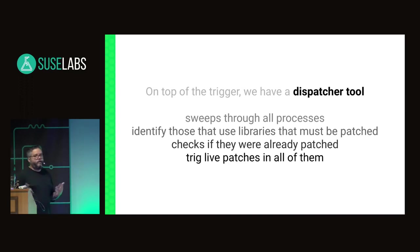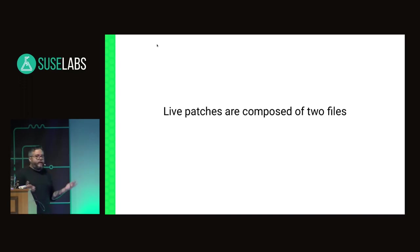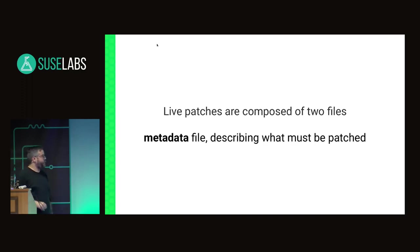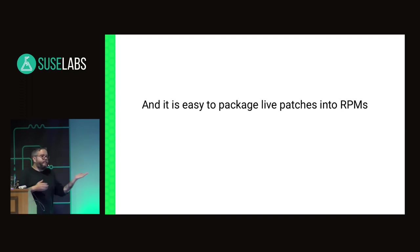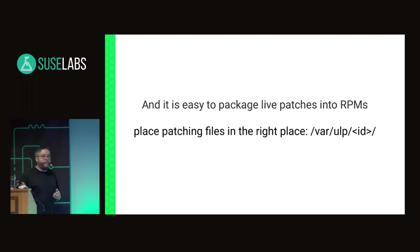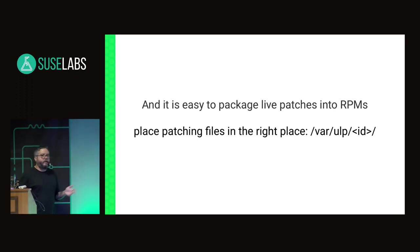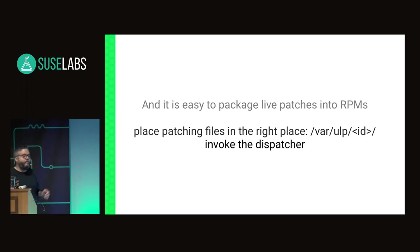On top of the trigger, we have a dispatcher tool that makes it easier to patch processes. The dispatcher sweeps through all processes, identifies those using the library that need to be patched, and if they were not patched, applies the live patches. It's a high-level management tool. Live patches are composed of two main files: a metadata file describing which functions must be replaced by which other functions, and a shared object — regularly compiled with GCC — that brings the replacement functions. It's very easy to package with RPM by placing patching files into a predefined directory, currently /var/ulp with a unique patch ID, then invoking the dispatcher tool.